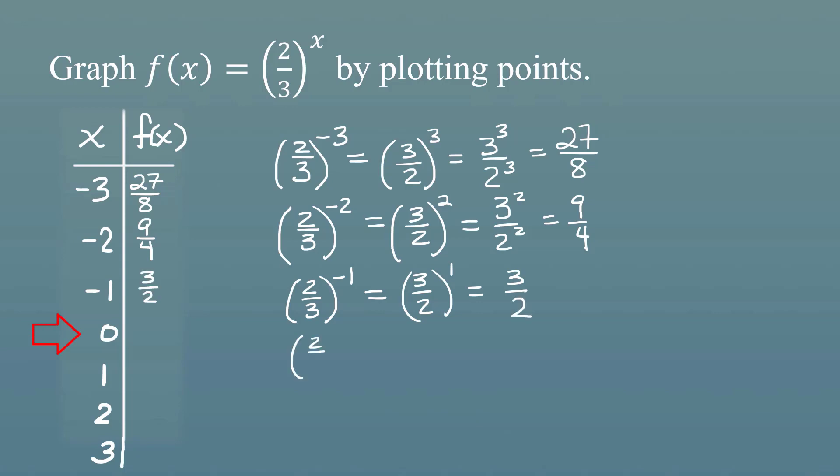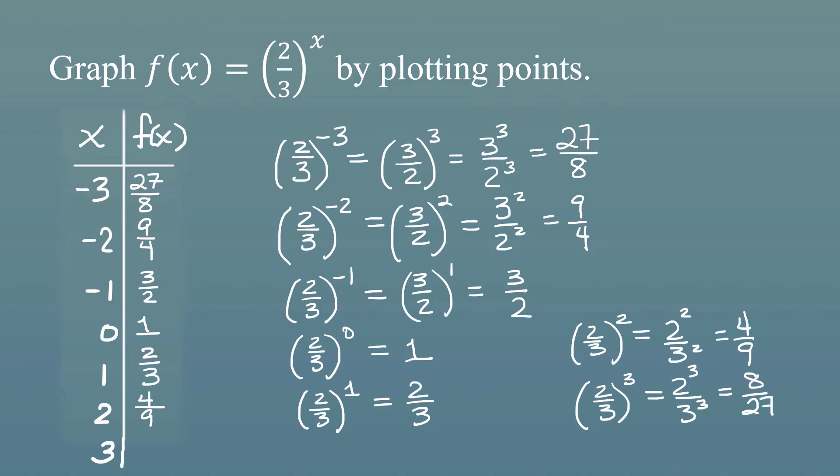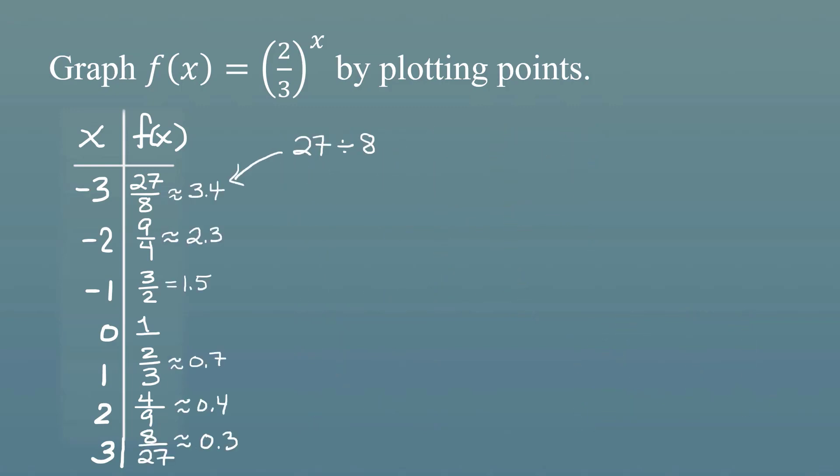Now let's raise two-thirds to the zero power. Anything raised to the zero power is just going to be one. Now let's raise two-thirds to the first power. Anything to the first power is itself, so that's just going to be two-thirds. Now let's raise two-thirds to the second power. That's going to be two squared over three squared, which is four-ninths. And now let's raise two-thirds to the third power. That's going to be two cubed over three cubed, which is going to be eight-twenty-sevenths.